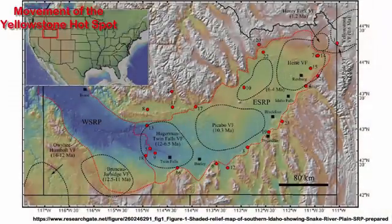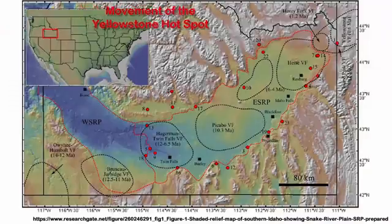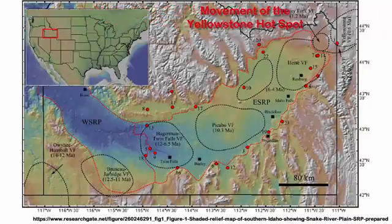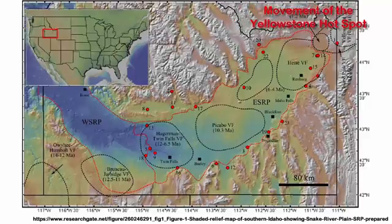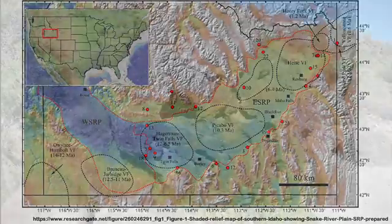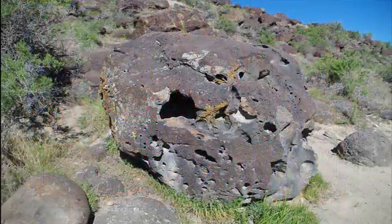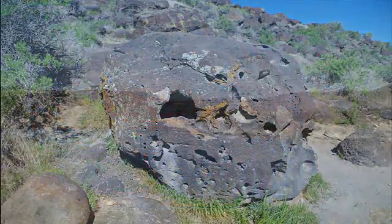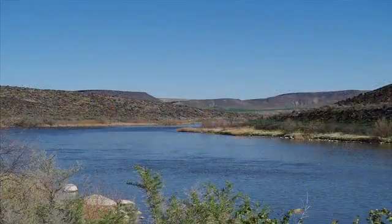Over time, the North American Plate moved westward over the Yellowstone Hotspot, cutting a swath from the Oregon-Idaho border across southern Idaho and into Yellowstone National Park. As a result of the North American continent's trip over the hotspot, an adjacent zone developed as the Earth's crust was pulled apart, forming a large topographic depression.